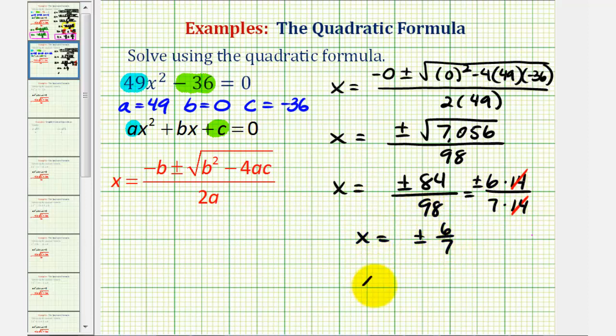We can say x equals positive six-sevenths, or x equals negative six-sevenths. And because we have two real rational solutions, this does tell us that the original equation was factorable, so to check our solutions, let's go ahead and solve this by factoring.